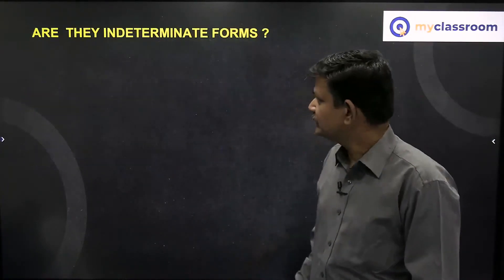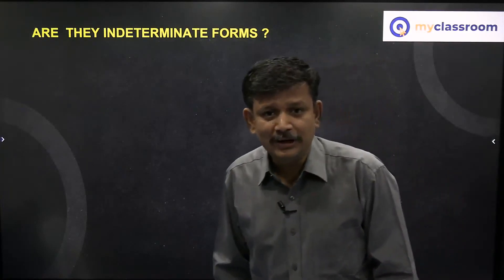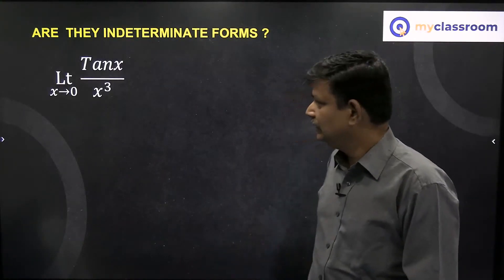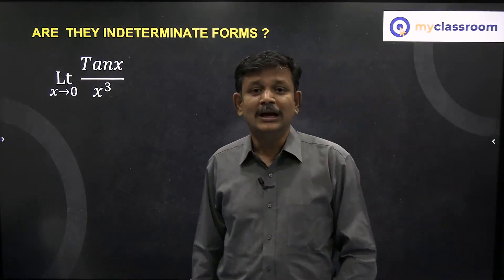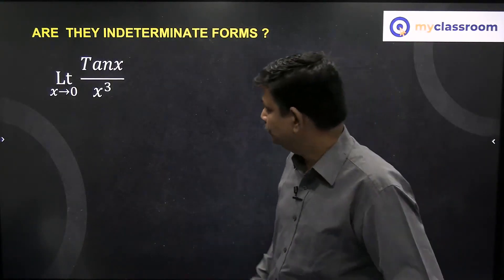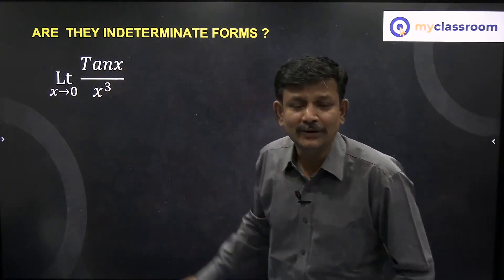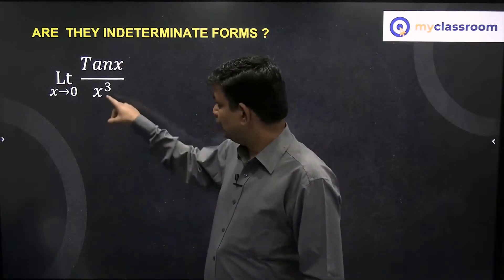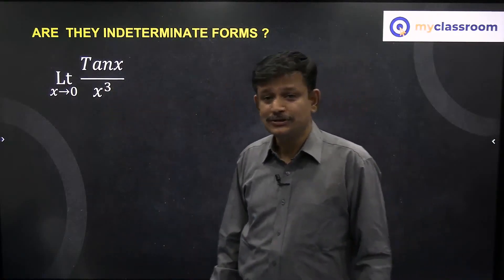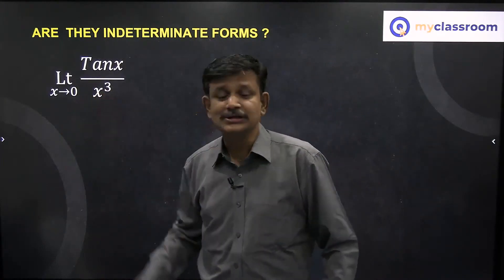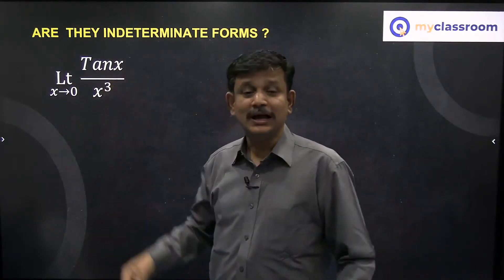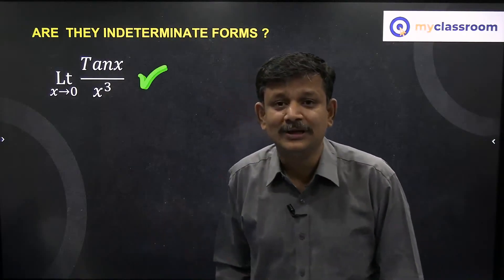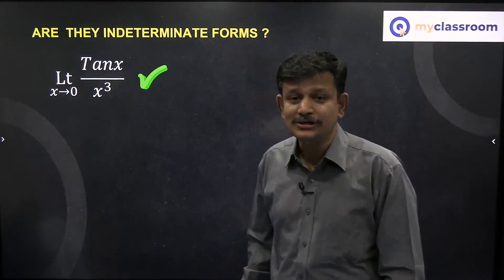Let us see if you have understood this. Consider the limit as x tends to 0 of tan x by x cubed. As x tends to 0, tan x is approaching 0 and x cubed is also approaching 0. So this is an indeterminate form 0 by 0.